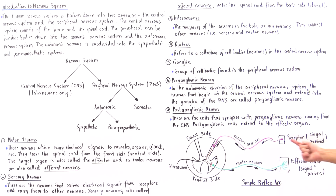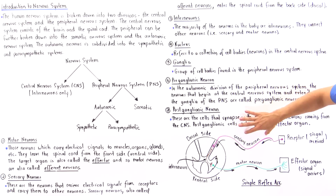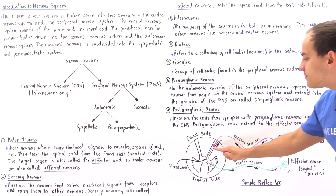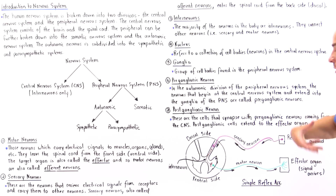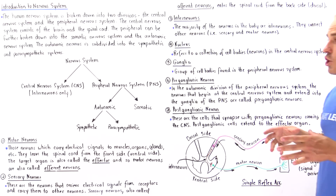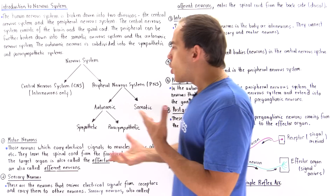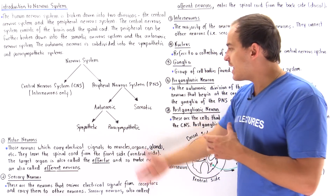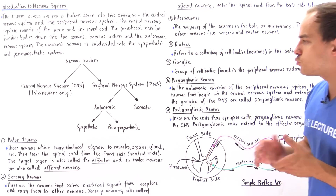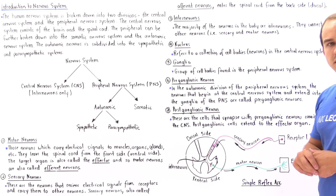So this is where the signal arrives and where it is received by the receptor. We have the sensory neuron, the interneuron, and the motor neuron — this is a simple reflex arc. In the next several lectures, we're going to discuss the individual functionality of each one of these systems in detail.